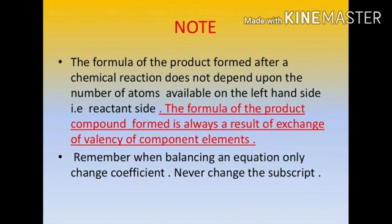Children, while balancing a chemical equation, keep these two things in mind. The formula of the product formed after a chemical reaction does not depend upon the number of atoms available on the left-hand side, that is the reactant side. The formula of the product compound is always a result of exchange of valency of component elements. Also remember: when balancing an equation, only change the coefficient, never change the subscript.